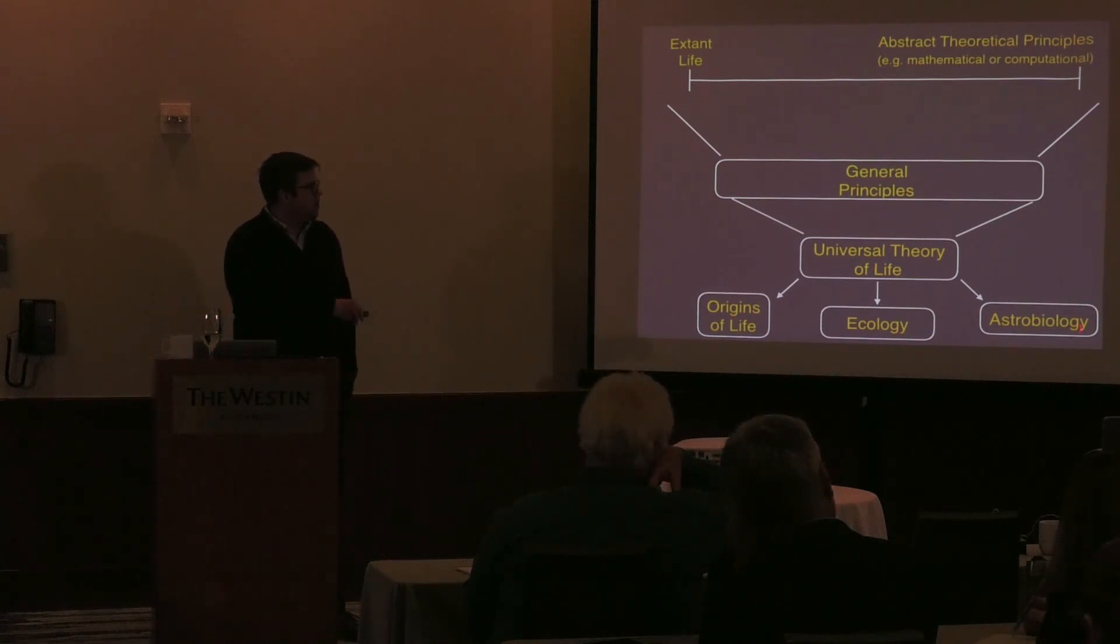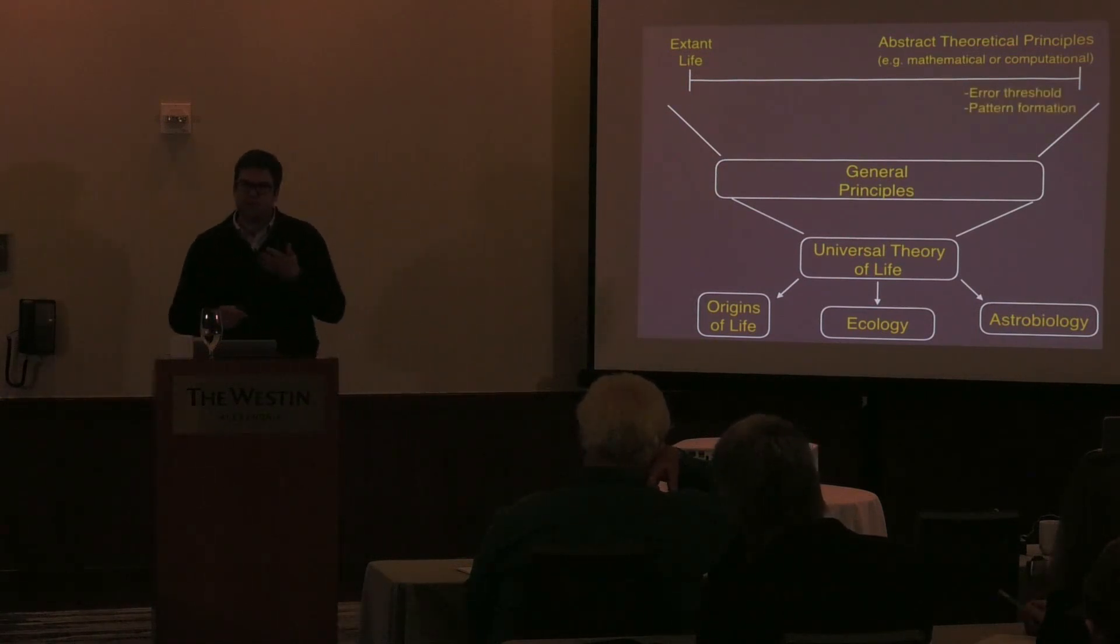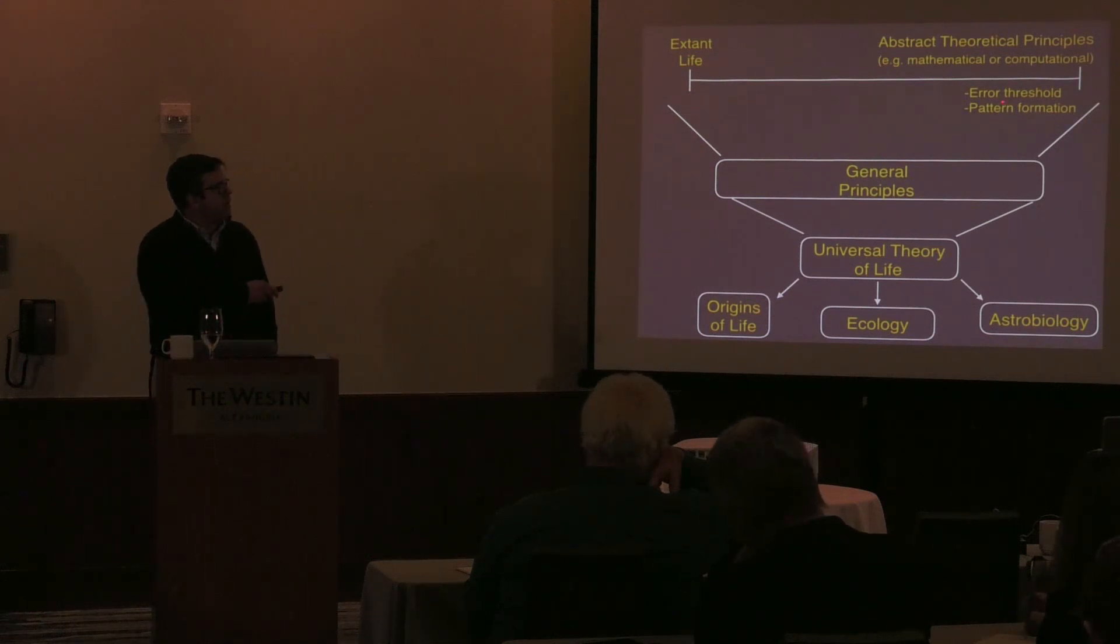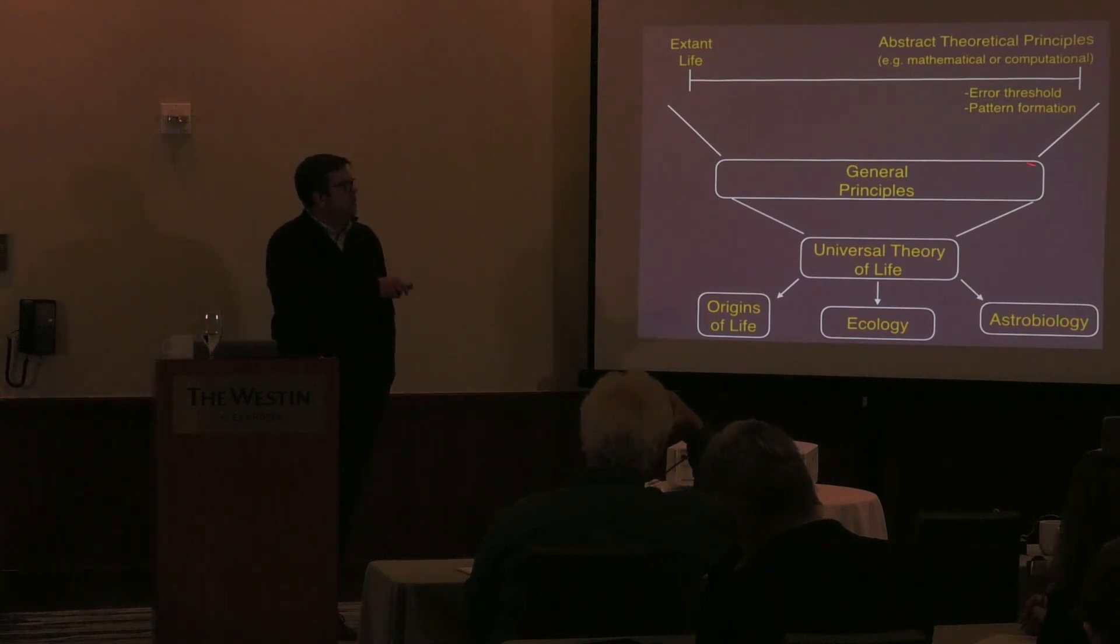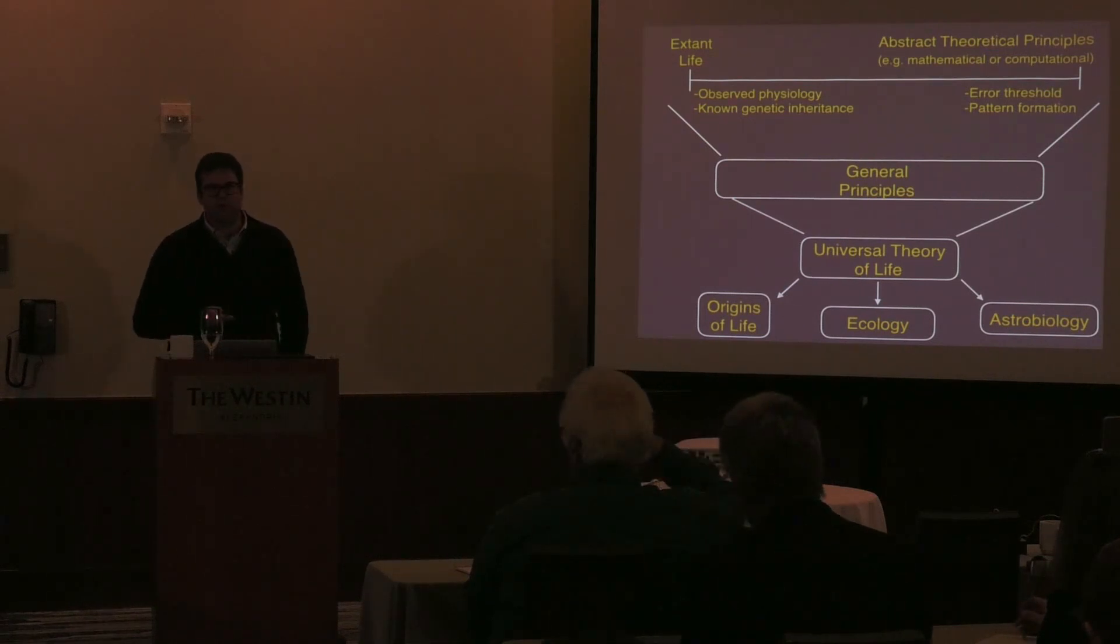These questions are really wide open because we struggle even with one theory of life. I think we have, at this far right end of the spectrum, already a lot of progress. Some of the principles that David talked about yesterday, other things like the error threshold, which is the maximum mutation rate you can have given the length of a genome and the overall strength of selection in the evolutionary system, things like pattern formation. We need to find some way to connect those to observed physiology and extant life, things like known genetic inheritance, and bring all this together to form some universal theory of life.